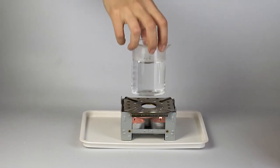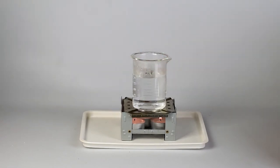Pour approximately 125 milliliters of boiling water into the beaker and put it onto the flame diffuser.